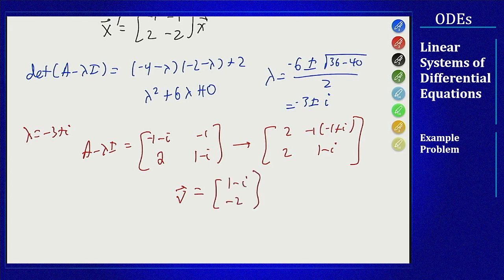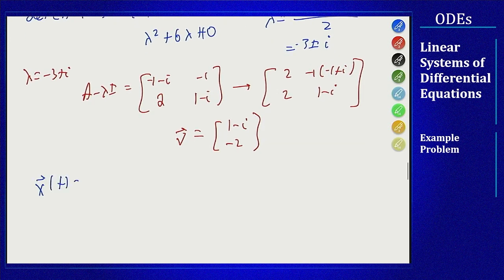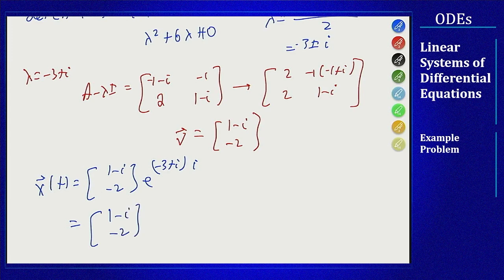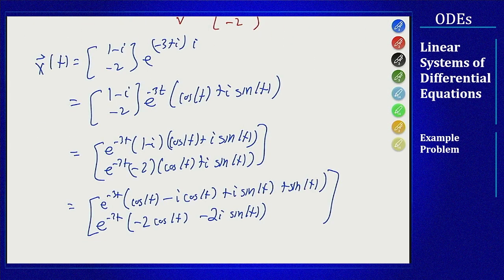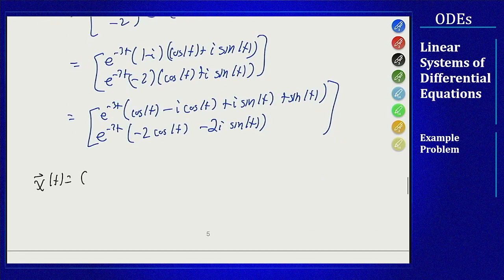From that eigenvector we can write a general solution. We're starting with the complex solution 1 minus i, minus 2, e to the minus 3 plus i times t. We can expand out using Euler's formula and then distribute through and simplify. We can then write the general solution by splitting out the real and imaginary parts here.